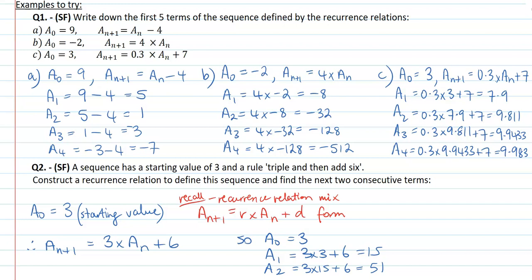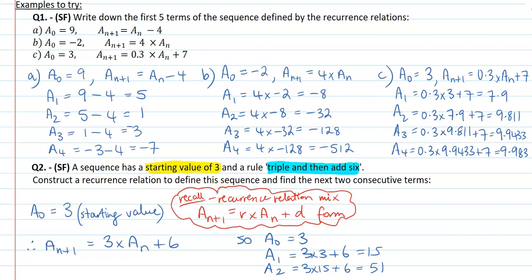For Question 2, we have a starting value of 3 and the rule says triple and then add 6. That implies it's one of those mixed arithmetic and geometric recursion sequences. We put it in the form A_{N+1} equals R times A_N plus D. The triple part gives us R equals 3 and adding 6 gives the arithmetic component. So the recursion formula is A_{N+1} equals 3 times A_N plus 6, and the next two consecutive terms are 15 and 51.